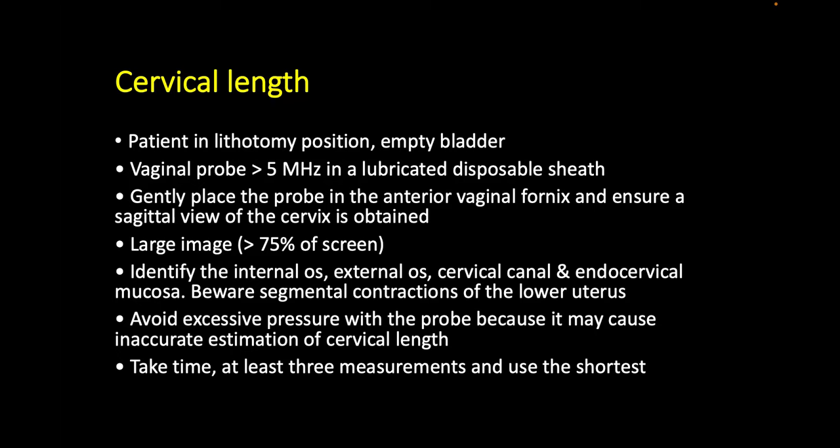The image has to be magnified so that it occupies 75% or more of the screen. The structures we need to identify include the internal os, the external os, the endocervical canal, and the endocervical mucosa. It's important to identify these structures to be sure we are assessing the cervix and not including the lower uterine segment, which might contract and give a falsely increased cervical length.